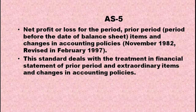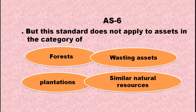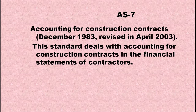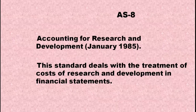AS5 deals with the treatment in financial statements of prior period and extraordinary items and changes in accounting policies. AS6 does not apply to assets in the category of forests, wasting assets, plantations, or similar natural resources. AS7 deals with accounting for construction contracts in financial statements of contractors. AS8 deals with the treatment of cost of research and development in financial statements.